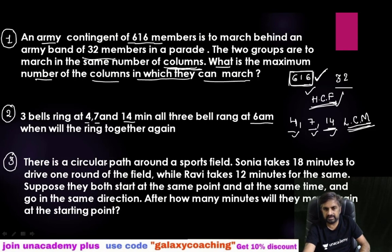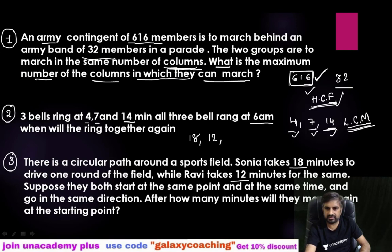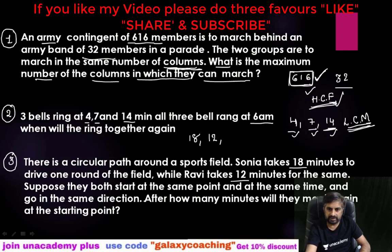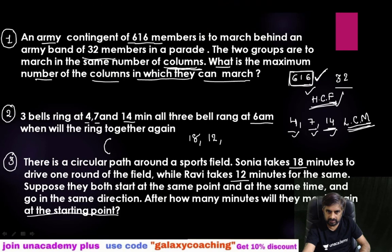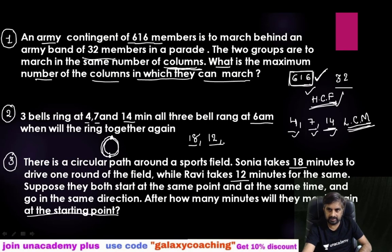Next question: there is a circular path around a sports field. Sonia takes 18 minutes to drive one round of the field, while Ravi takes 12 minutes for the same. Suppose they both start at the same point and at the same time and go in the same direction. After how many minutes will they meet again at the starting point? One will take 18 minutes and the other 12 minutes, so they will not meet in just 18 minutes — your answer will be greater than these two numbers. Whenever your answer is greater, you need to find out LCM.